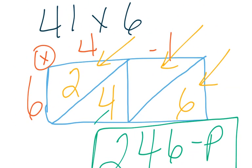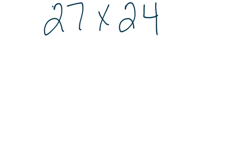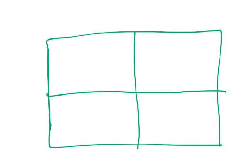So like I said, go back and look through those if you need to. Next problem is 27 times 24. So make my box. I have 2, 2-digit numbers, so I'm going to have 4 little squares in my box.